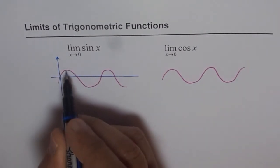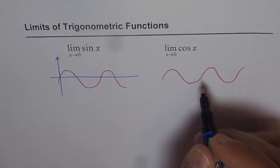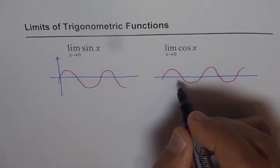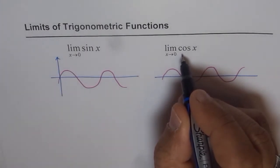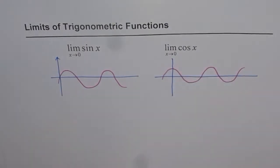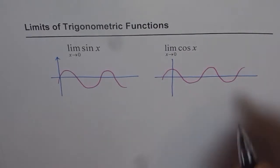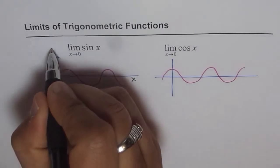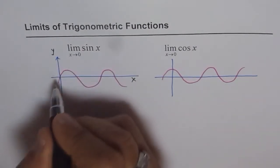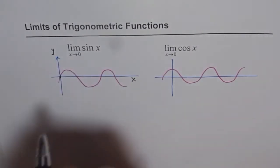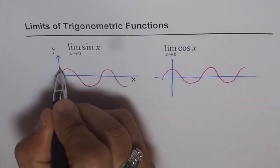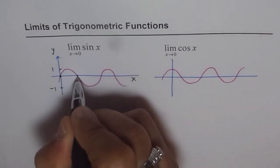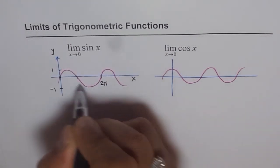Assume the maximum and minimum values are plus and minus 1. For cosine, the function starts at 1 — cos of 0 is 1. So cosine starts at a maximum. For sine, when we are at 0, sine x is 0. The maximum value is plus 1 and the minimum is minus 1. The time period is 2 pi, so this is pi and that is 2 pi.